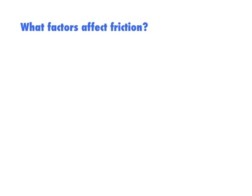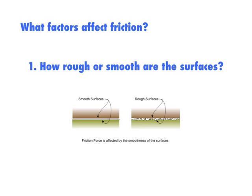What factors determine the amount of friction? Since friction is related to the roughness or smoothness of surfaces, obviously how rough or smooth the surfaces are determines the amount of friction. If surfaces are very smooth, there's going to be less friction, and if surfaces are very rough, there's going to be more friction.